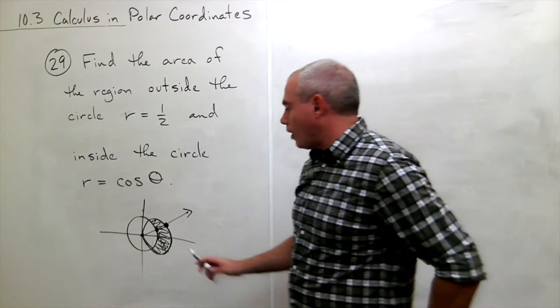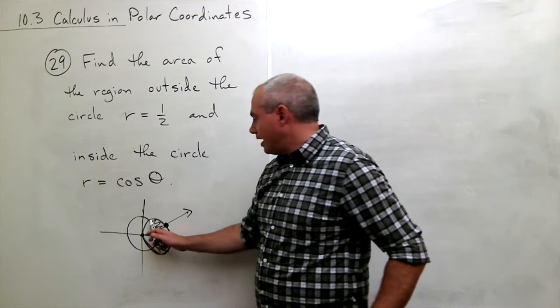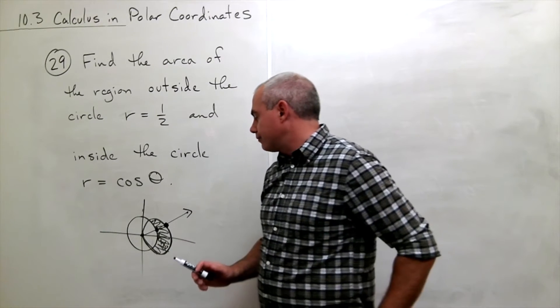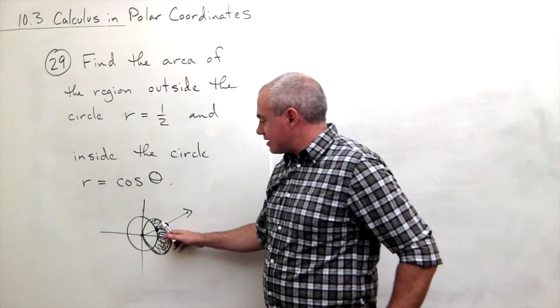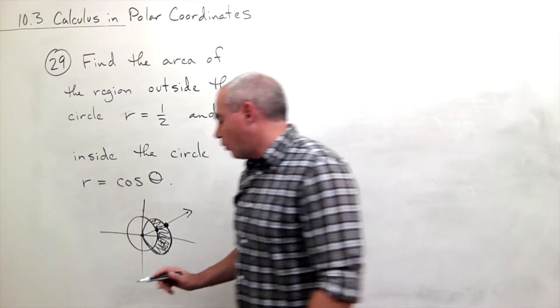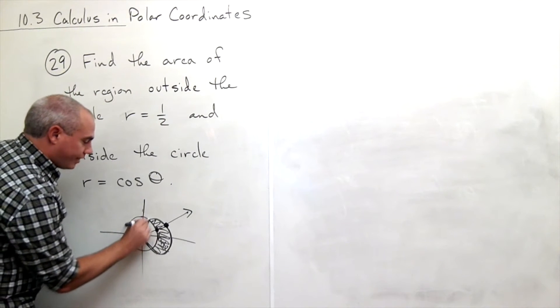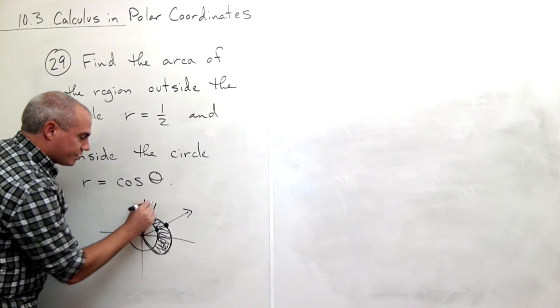Now the question is, well, what am I integrating from and what am I integrating to? I notice that this is a symmetric region. So what would really be nice is if I could just find out what this angle is where these two intersect,